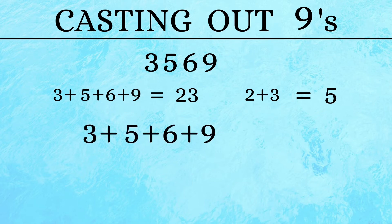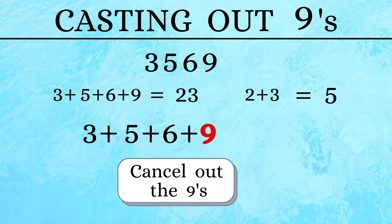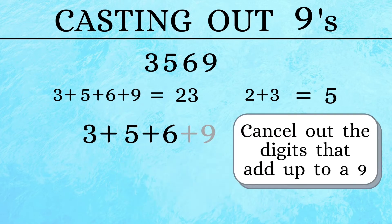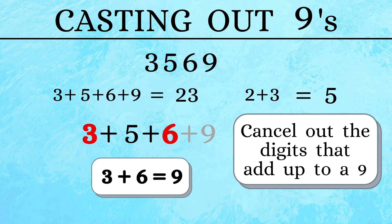Casting out 9s. Here we can first cancel out the 9s. We have one 9 here and we cancel it out. Then we can also cancel the digits that add up to a 9. In this example, 3 and 6 add up to a 9.